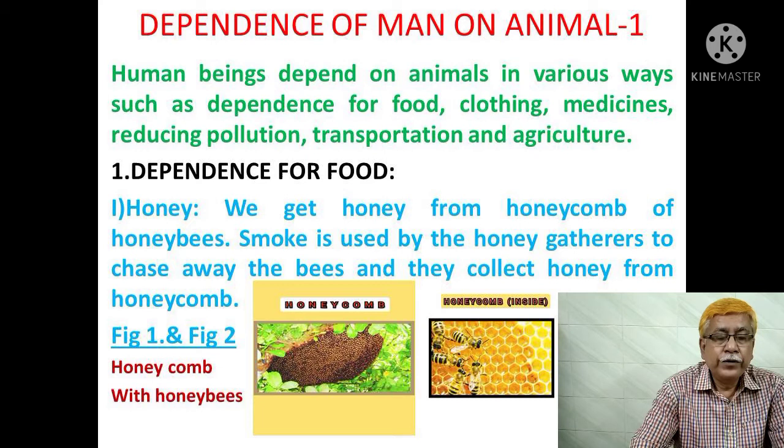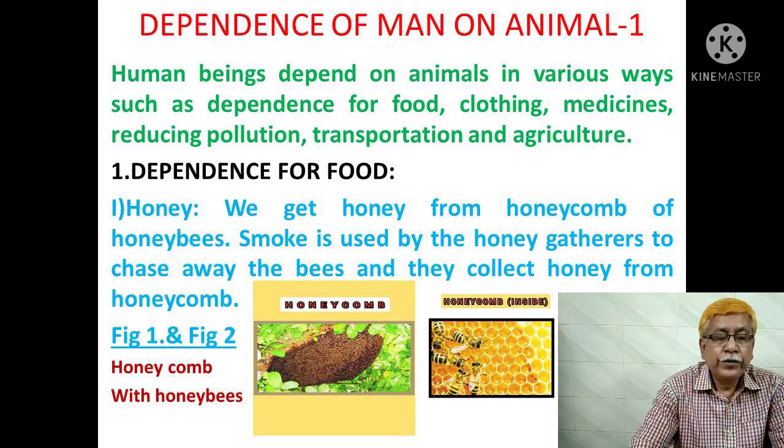Human beings depend on animals in various ways, such as dependence for food, clothing, medicines, reducing pollution, transportation, and agriculture. First, dependence for food.